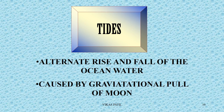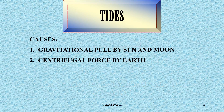Tides refer to the alternate rise and fall of ocean water. There are basically two forces responsible for tides to occur. One is the gravitational pull of the moon and also of the sun. There is a general misconception that it's only the moon that causes tides, but the sun also contributes. The second force is the centrifugal force created by the rotation of Earth. So, the two basic causes of tides are gravitational pull by sun and moon, and the centrifugal force by Earth.